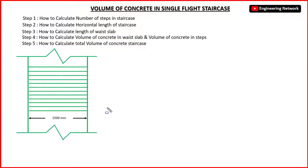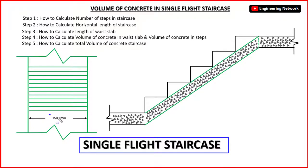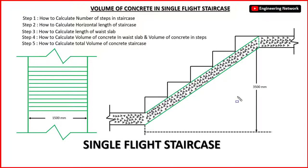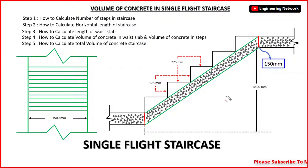If you look at the plan of this staircase, it is basically a single flight staircase. The width of this single flight staircase is 1500 mm, which is equal to 1.5 m. The height of this staircase from ground floor is 3500 mm, which is equal to 3.5 m. Now I have all the necessary data for the volume of concrete calculation in a staircase, so let's start calculating.